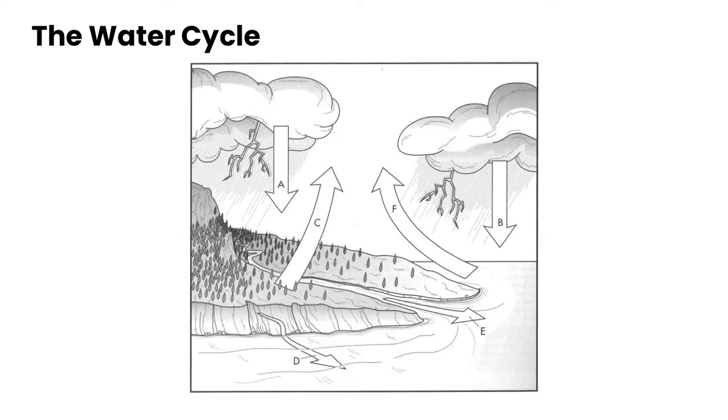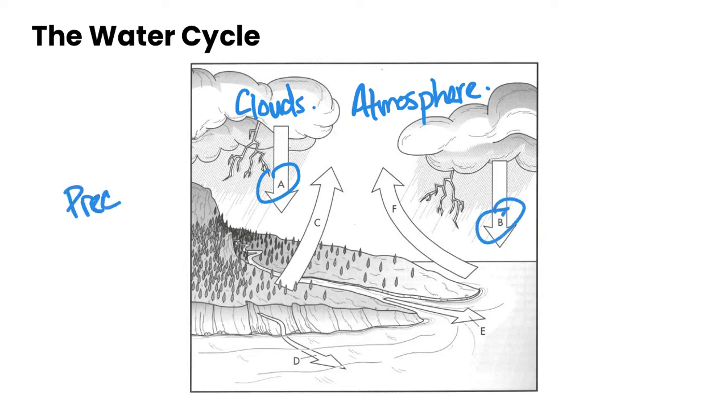Let's begin our water cycle looking at our atmosphere. And so in our atmosphere an important component is our clouds. What happens is when water vapor cools it condenses and falls to the earth as rain. This is a process both A and B known as precipitation. So in A the precipitation is happening over land and in B it is happening over the ocean or another body of water.